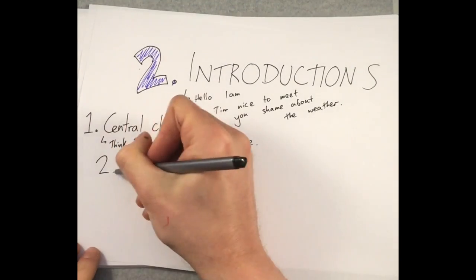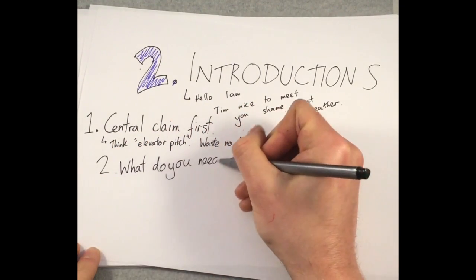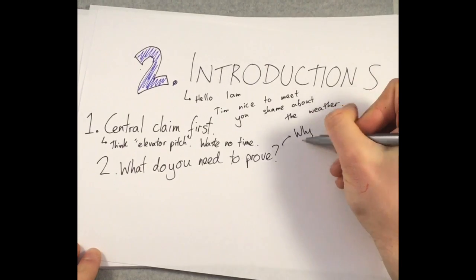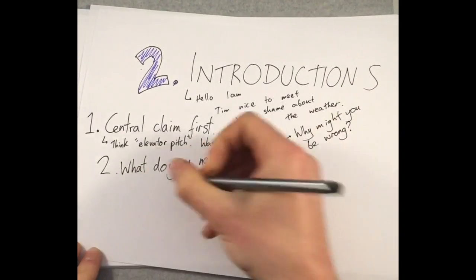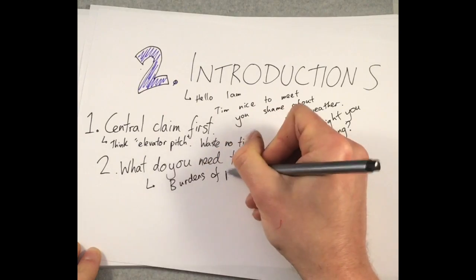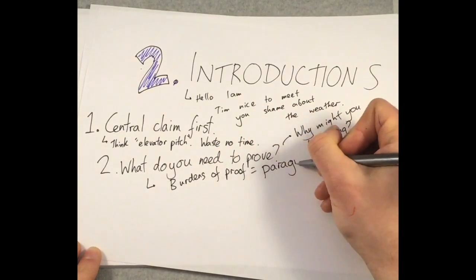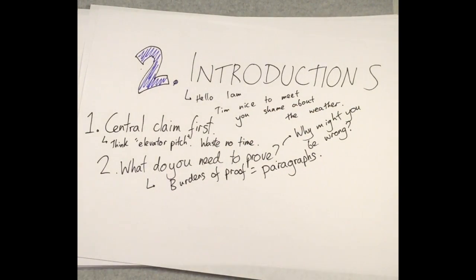Next, think about what you need to prove in order to make that claim. What might the immediate negative reaction of someone reading your central claim be? How can you defend yourself against that response? Ideally, you want to be able to split your burdens of proof, the things you need to prove in order for your argument to be true, into a few different points. These will be your paragraphs.